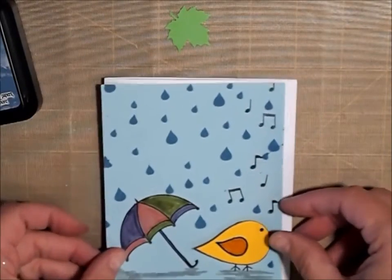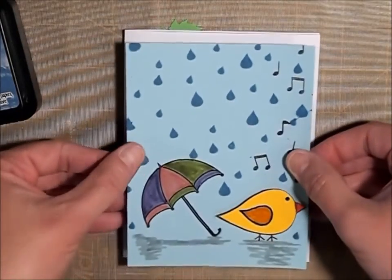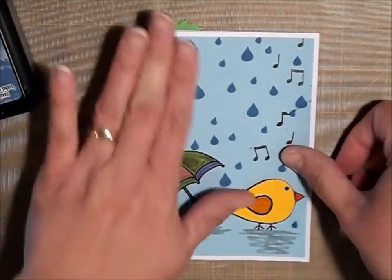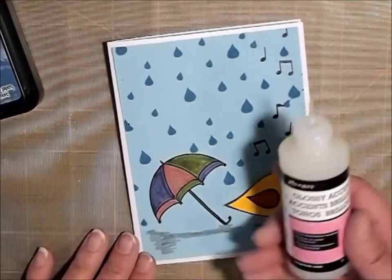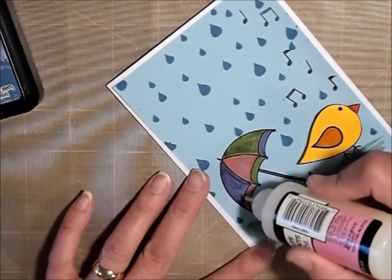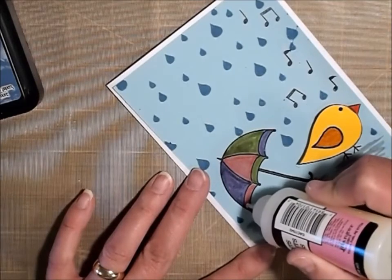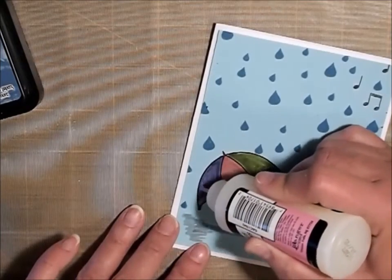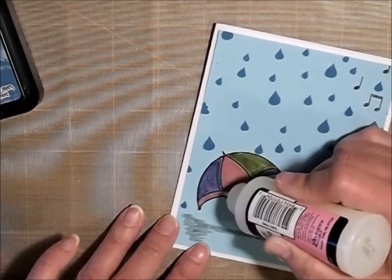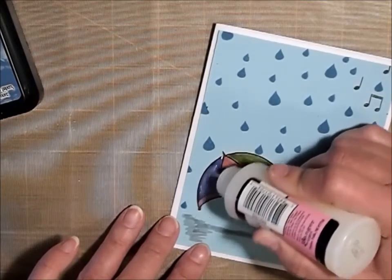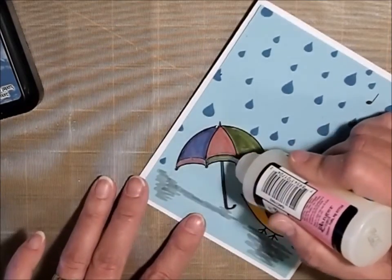Okay, and I'm just going to glue this down right here. So I'm just going to glue this down and I just use some double stick tape. Okay, to finish it up, I'm using some glossy accents. I'm just going to put that on the umbrella.